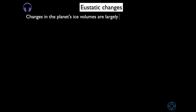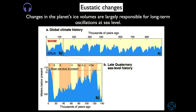The changes in the planet's ice volumes are largely responsible for long-term oscillations in sea level. The graph at the top presents the oscillation between warm and cold Earth's surface temperature. Note that there is an average 100,000-year pattern in these oscillations. You can see, for example, that Earth got colder at 800,000, 700,000, 600,000, 450,000, and 350,000 years ago, and so on.